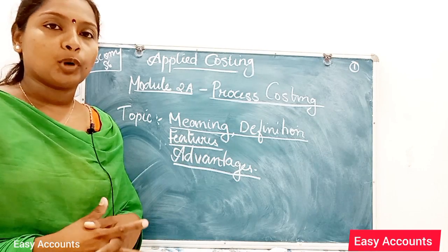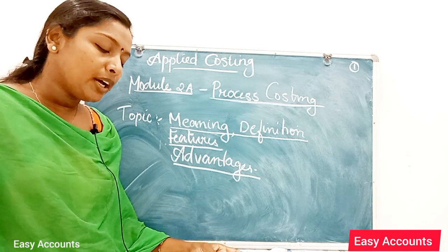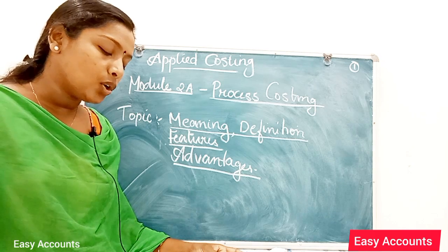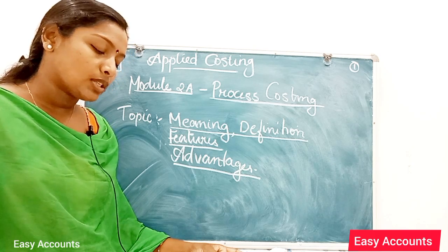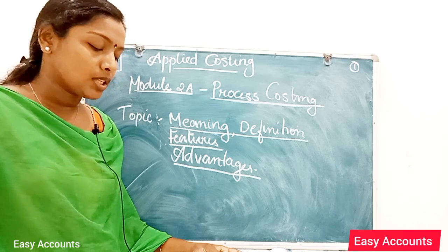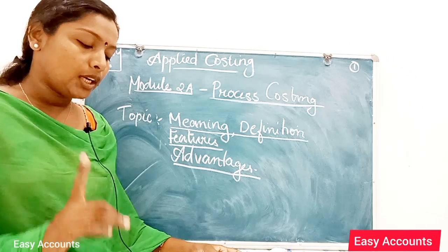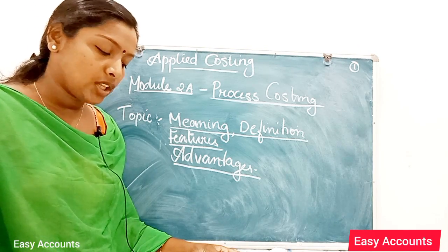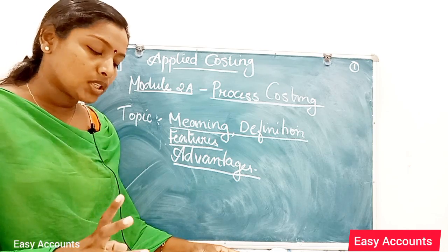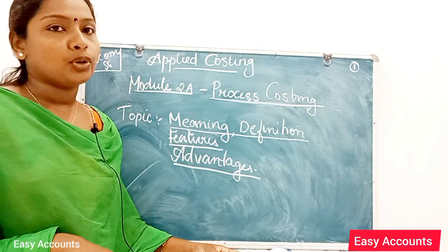The cost per unit is ascertained by dividing the total cost of each process by the normal output. The cost per unit is calculated by dividing the total cost of each process by the normal output.